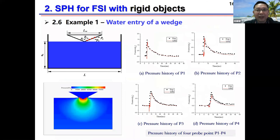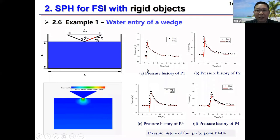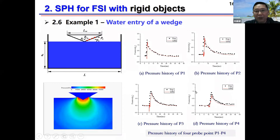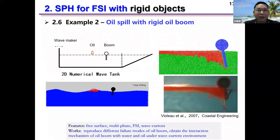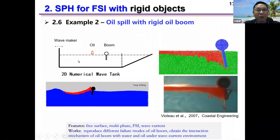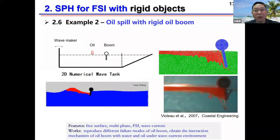Here are some examples. The first example is the water entry of a rigid wedge. We have four pressure probe points and recorded the pressure profiles at these points to compare with experimental observations. We can see both the pressure field and the magnitude agree well with experimental results.